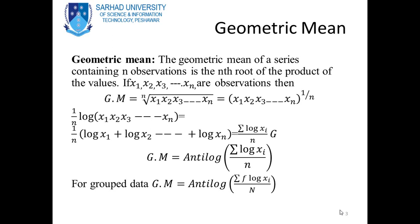Taking the anti-log on both sides, geometric mean equals anti-log of [Σ(log xi)/n]. For grouped data, geometric mean equals anti-log of [Σ(f · log xi) / Σf].